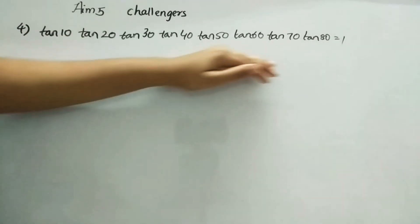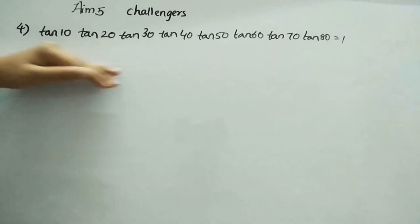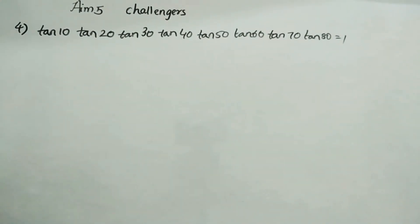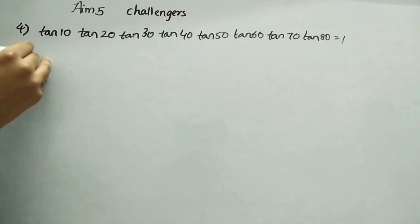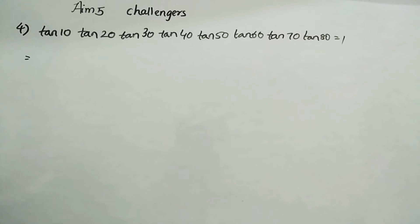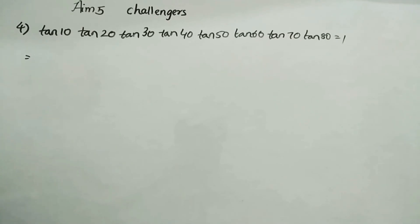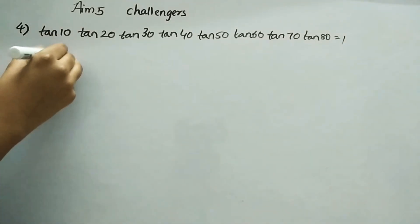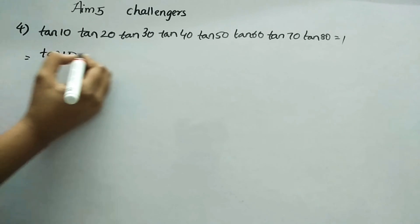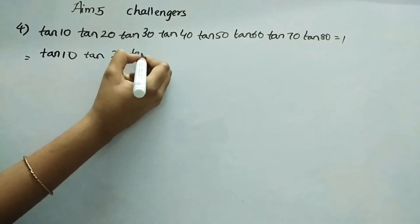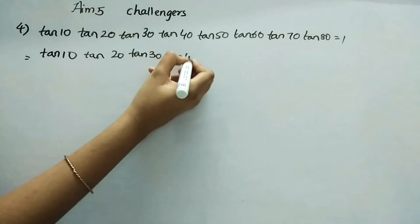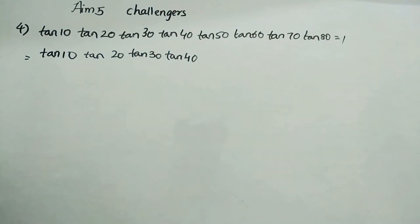Fourth question: we have to prove that tan10° × tan20° × tan30° × ... × tan80° equals 1. We take this as the LHS and solve it. We write tan10, tan20, tan30, tan40 as they are. Then instead of tan50 we write tan(90-40), tan60 as tan(90-30), tan70 as tan(90-20), and tan80 as tan(90-10).